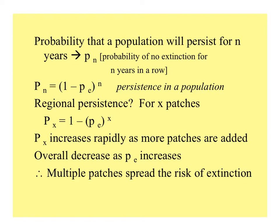That probability is equal to 1 minus p sub e, the probability of extinction, to the nth power. So for x patches, p sub x is equal to 1 minus the probability of extinction to the x power. The probability of persisting increases rapidly as more patches are added, and there's an overall decrease as the probability of extinction increases.